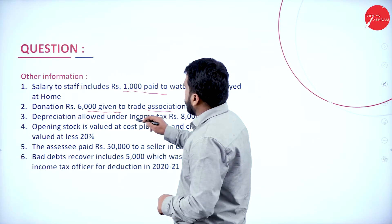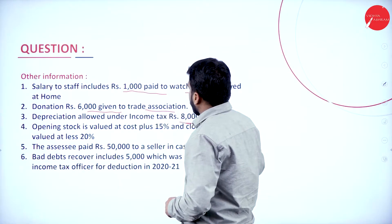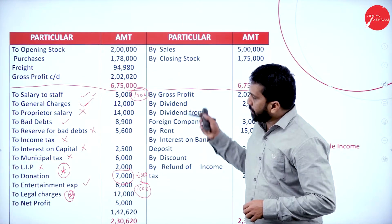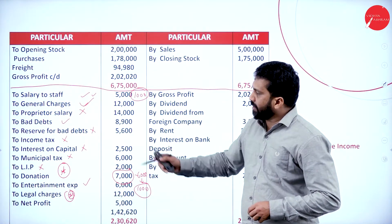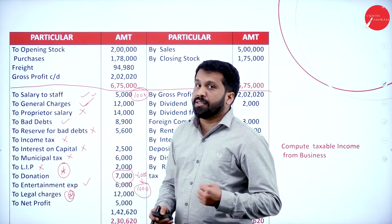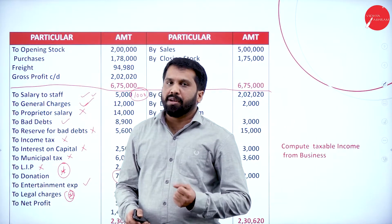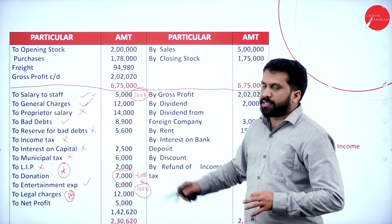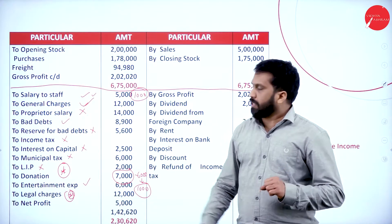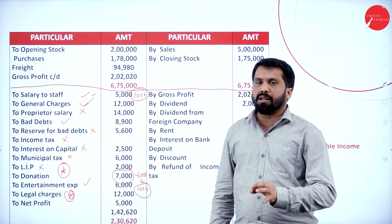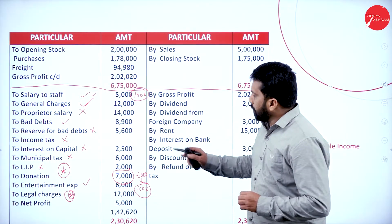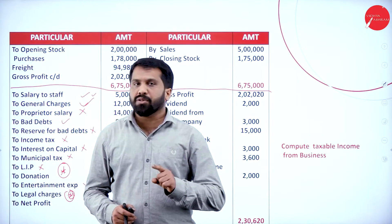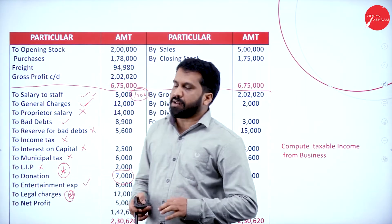Next one — depreciation allowed under Income Tax Act. Whatever depreciation comes in your problem, it will be part of your addition, the disallowed item. Whatever depreciation you get from the adjustment, you have to minus which is as per Income Tax. Any depreciation here as per your accounts — whatever depreciation given in the adjustment which is as per your Income Tax. I will come back later regarding depreciation.